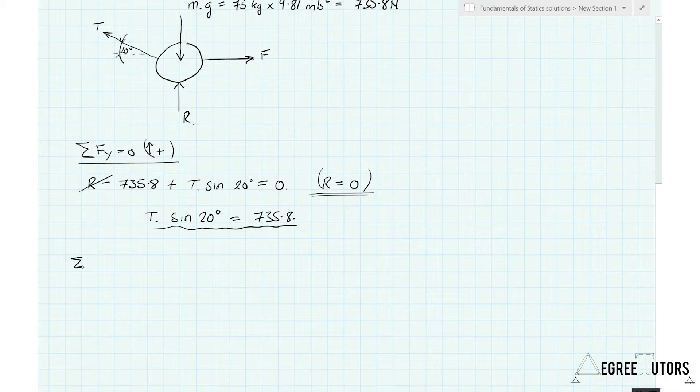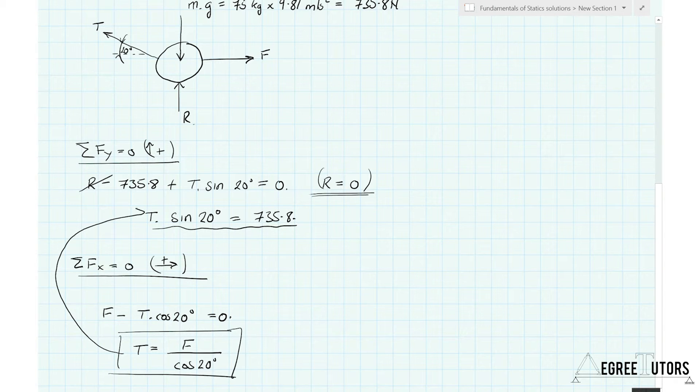So the next step is to consider the sum of the forces in the x direction, let those equal to zero because the ball isn't moving off anywhere, it's stationary. And we're going to say positive forces are to the right. Now we can say that F minus the horizontal component of the tensile force, minus T times the cosine of 20 degrees, that all has to equal zero because the ball is stationary. And we can then say that, rearranging to make T the subject of the equation, T is equal to F over the cosine of 20 degrees.